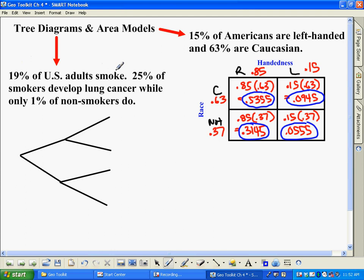19% of U.S. adults smoke. 25% of smokers develop lung cancer, while only 1% of non-smokers do. So the problem here is that the rate of getting cancer is different for whether or not you smoke or you don't smoke. So you can't do a table like this over here, one of these area models here.